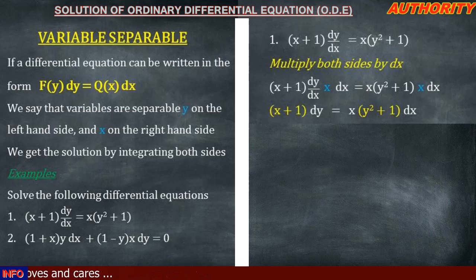In the left hand side we have x and y, and in the right hand side we still have x and y, so the variables are mixed and we want to separate them. On the left hand side we only want y to be there, so we are going to eliminate (x + 1) by dividing both sides by (x + 1). On the right hand side we only want x there, so we are going to divide both sides also by (y² + 1) to remove it.